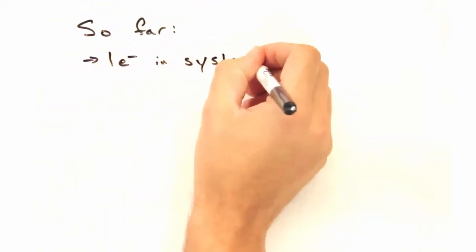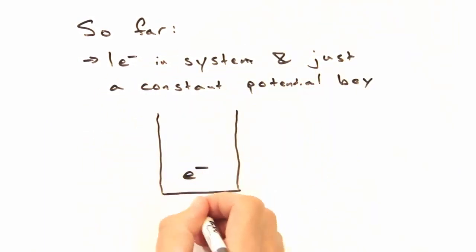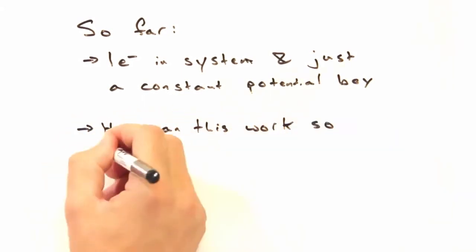So far, Eric, we've been assuming we only have one electron in our entire system. Right. And it's just in a box. Yep. Isn't that a bit simple? So how can this model work so well for solids?